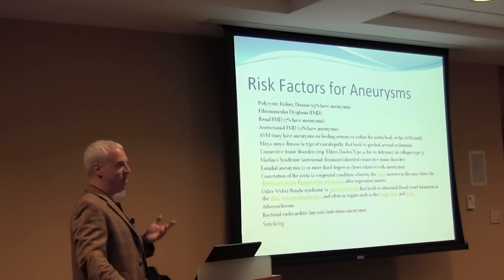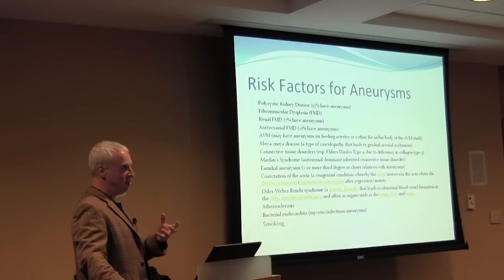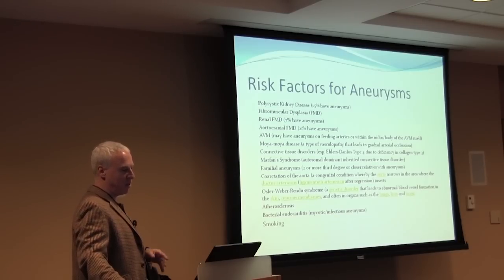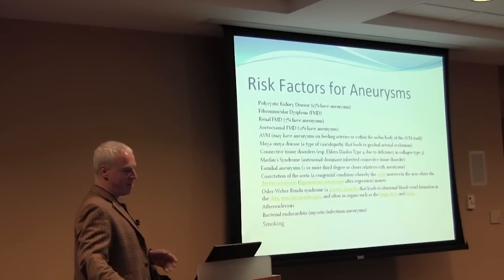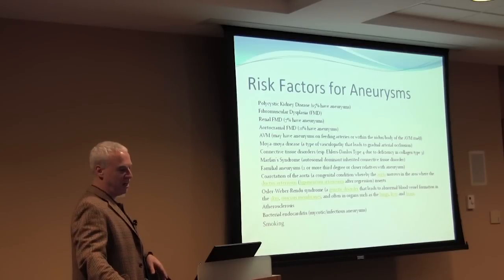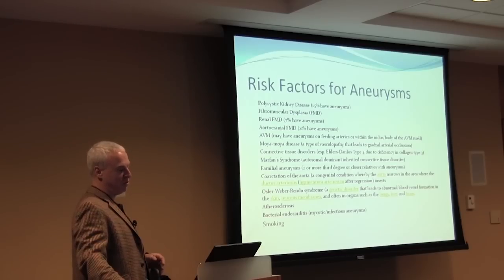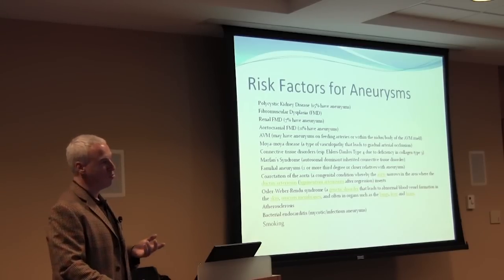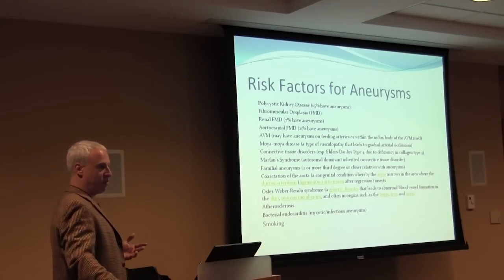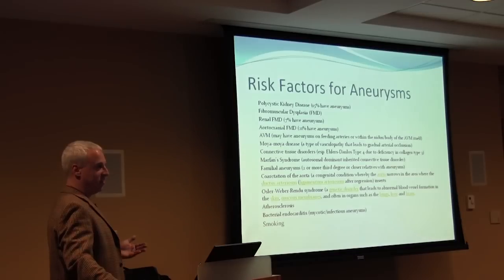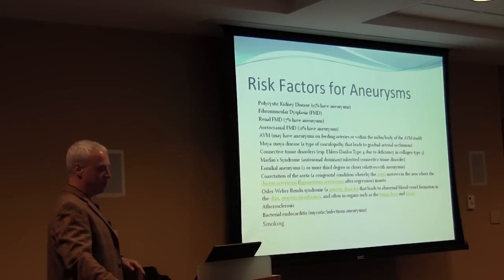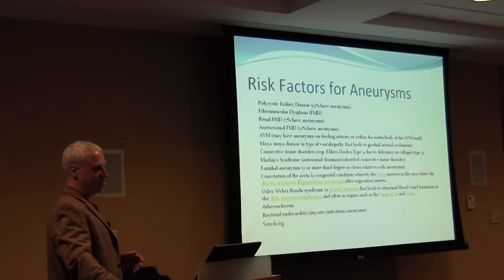AVMs — arteriovenous malformations — cause aneurysms both within the AVM itself and on feeding vessels due to turbulent flow. Moyamoya disease, a vasculopathy possibly autoimmune or viral in origin, can have aneurysms. Connective tissue disorders such as Ehlers-Danlos — a collagen disorder — and Marfan syndrome are risk factors. Familial aneurysms: if two or more family members within three degrees — a mother, aunt, sister, brother, or uncle — have had aneurysms, you have an increased risk. Coarctation of the aorta and atherosclerotic disease are also risk factors.